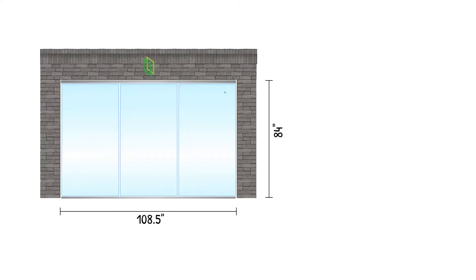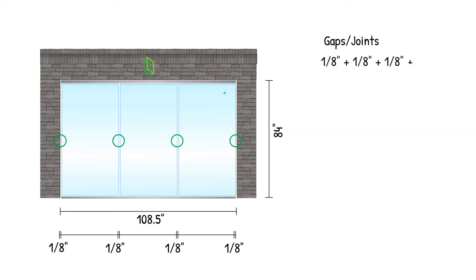Now we start subtracting. The first numbers we're going to need are the joints or gaps. For this example, I'm going to use an eighth inch gap between every piece of glass, and also an eighth inch gap at the walls. Now we add up those gaps — mine total up to a half inch. Next, we subtract: 108 and a half inches minus a half inch leaves us with 108.